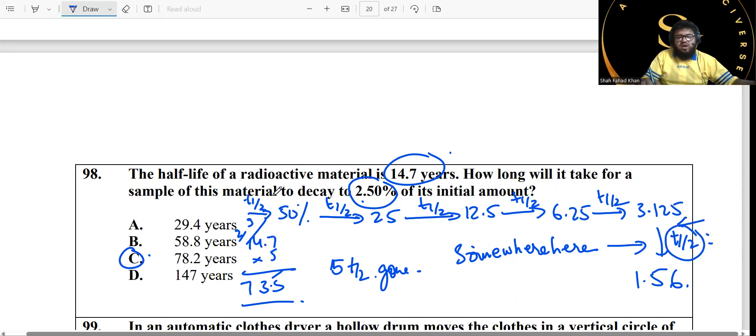Now 1.56 to 2.5, this means that something has happened over here. The 2.5 percent came during this half-life. Now let's count all the half-lives: one, two, three, four, five. Five half-lives have gone by, so 14.7 times 5 is calculated, which turns out to be 73.5. And then during this time, a few years later you will get 2.5, so it's going to be slightly higher than 73.5. The best possible answer is 78.